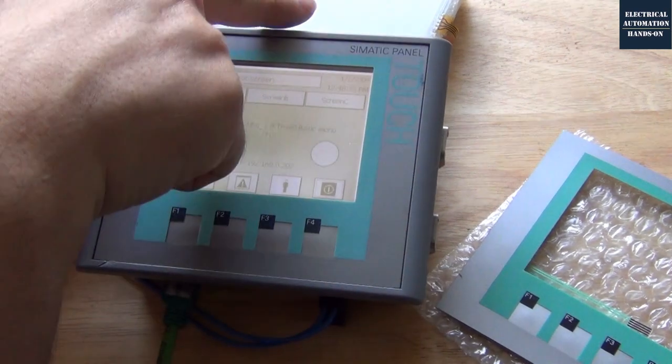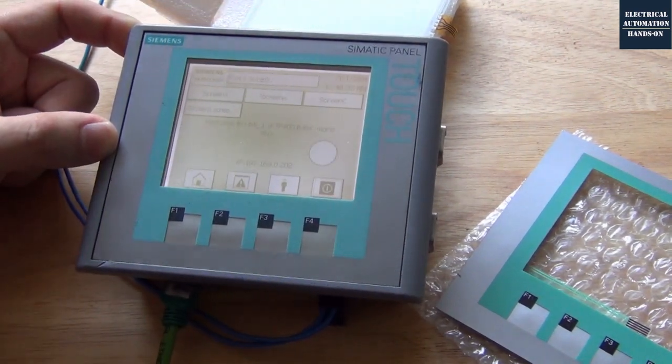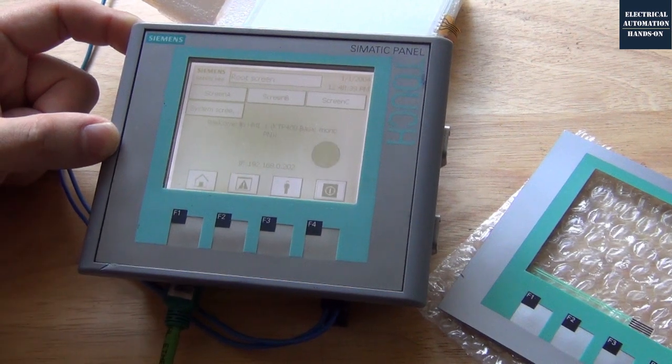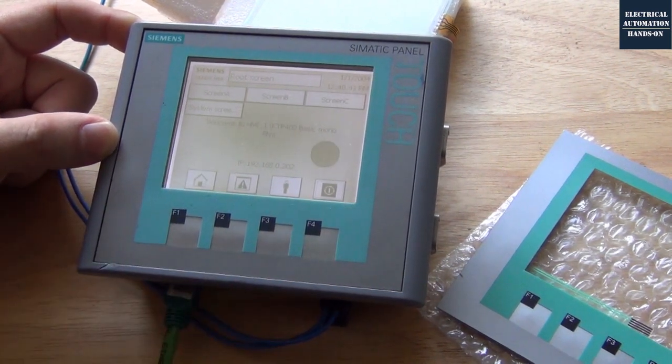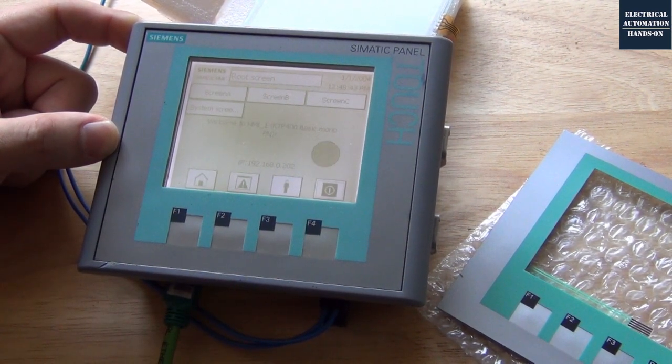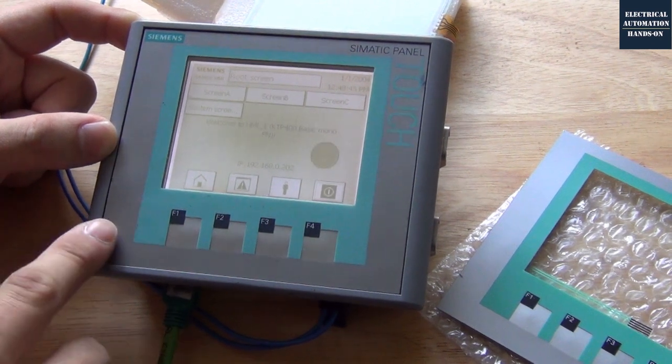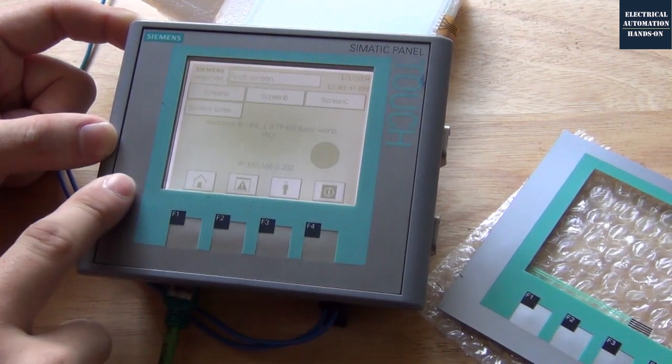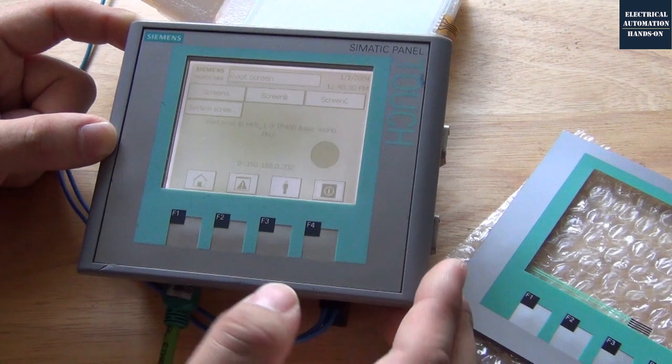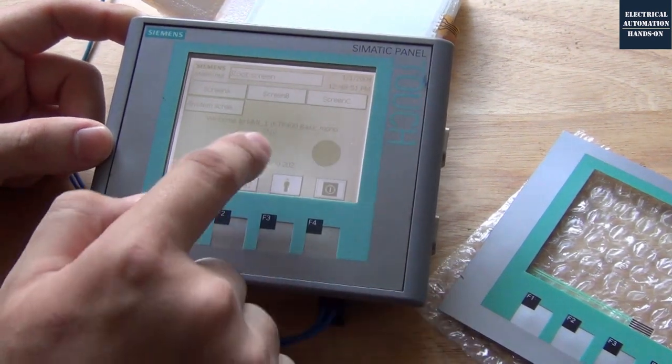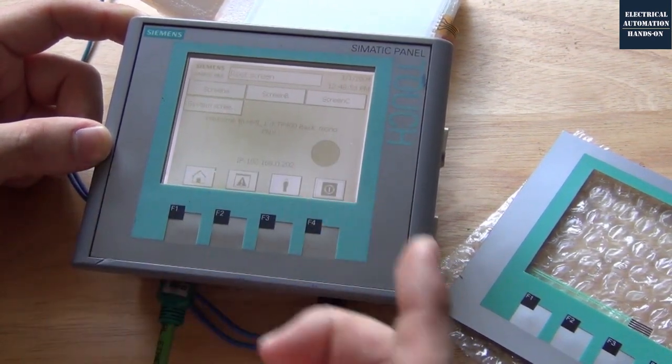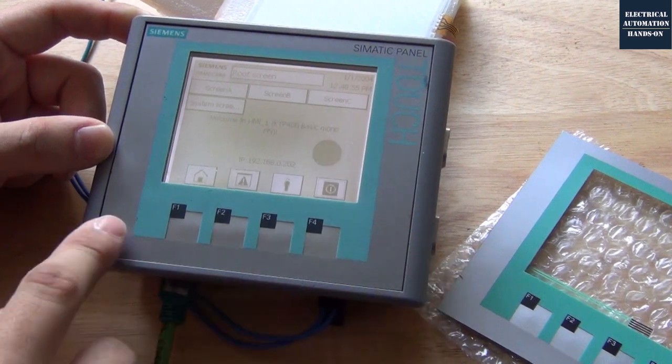Most of the cases, we will have the problem on the touching function. This is a normal worn out problem. Basically, we will replace the screen only. I just want to show if you try to order, you can order the screen and this film in case when you peel off this film, if you destroy that, you still have a new film that can be replaced. Alright, let's start.